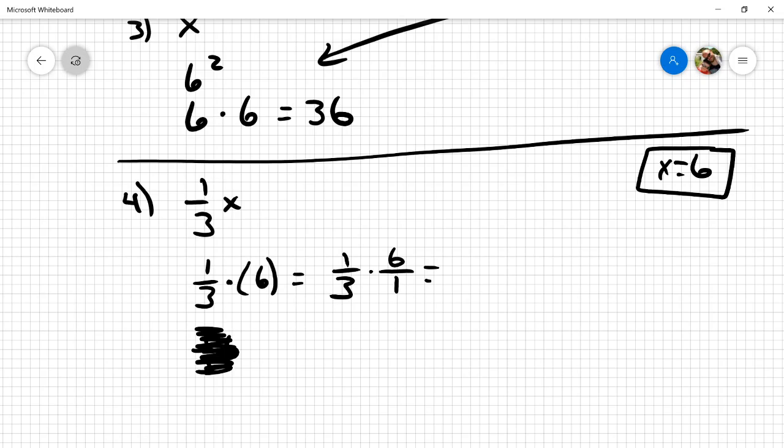Now, the joy about multiplying fractions, it just goes straight across. Six times one is six. Three times one is three. Now, Ms. Tyler does not require you to simplify. So six-thirds would definitely be the way to go. I like to simplify. Three goes into six two times. So you have a whole number of two.